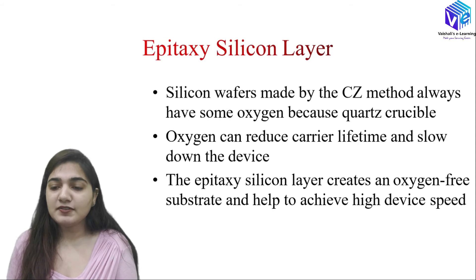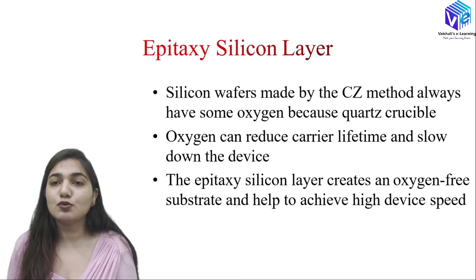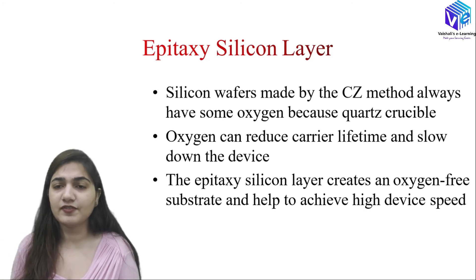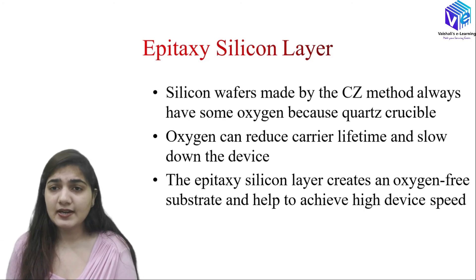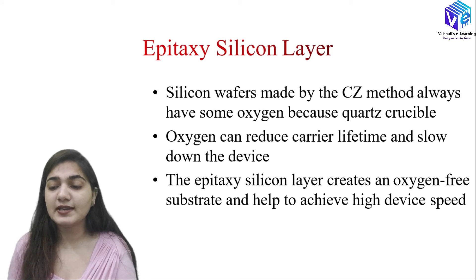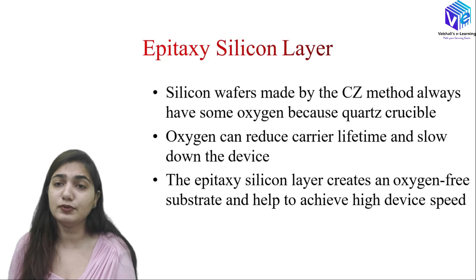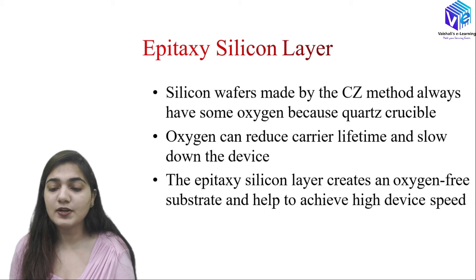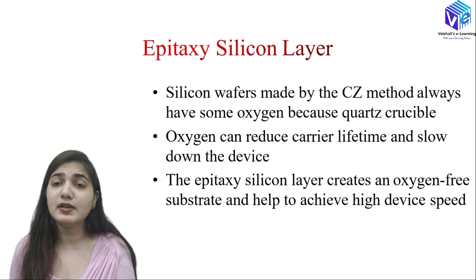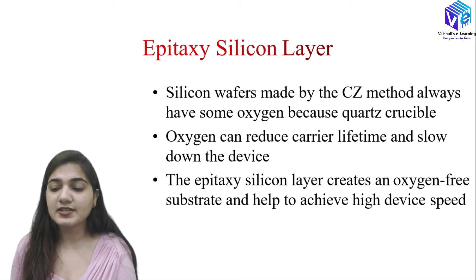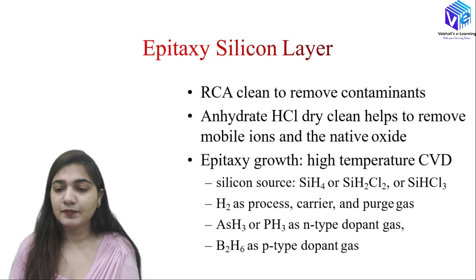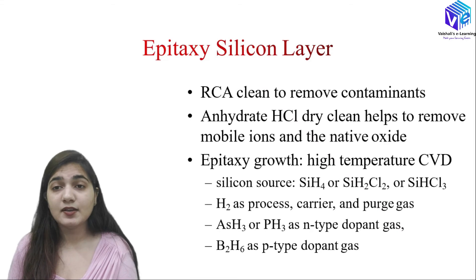Wafers made by the CZ method always have some oxygen as an impurity because of the quartz crucible used to hold the melt. Oxygen can reduce carrier lifetime and slow down the device. We want our ICs to be fast, so we want the epitaxial layer above the silicon crystal where there is less oxygen — this gives faster devices. The epitaxial silicon layer creates an oxygen-free substrate and helps achieve high device speed.